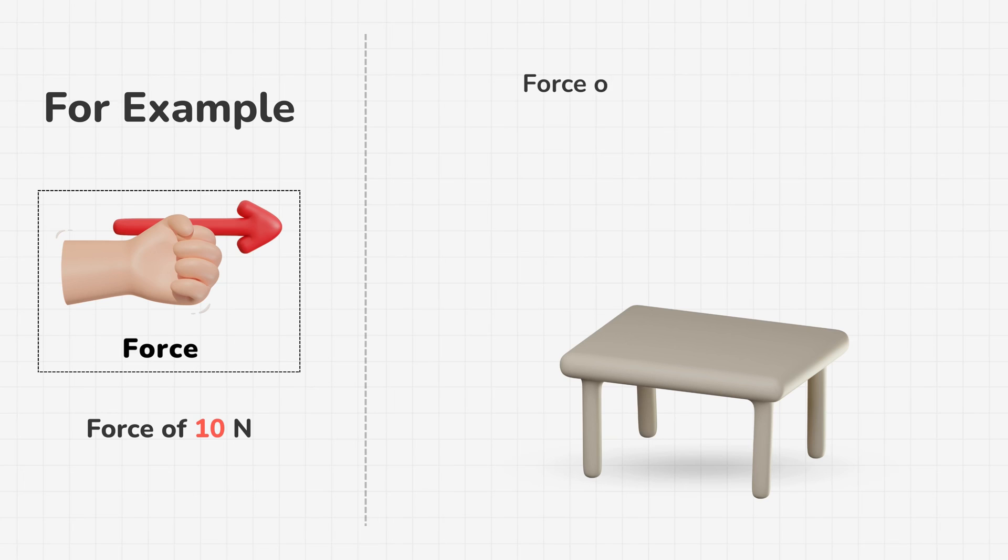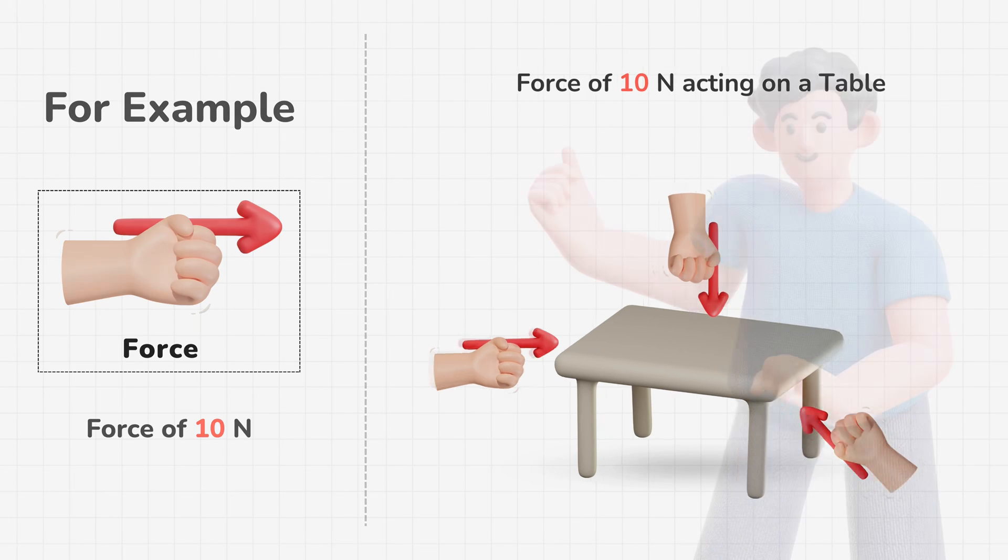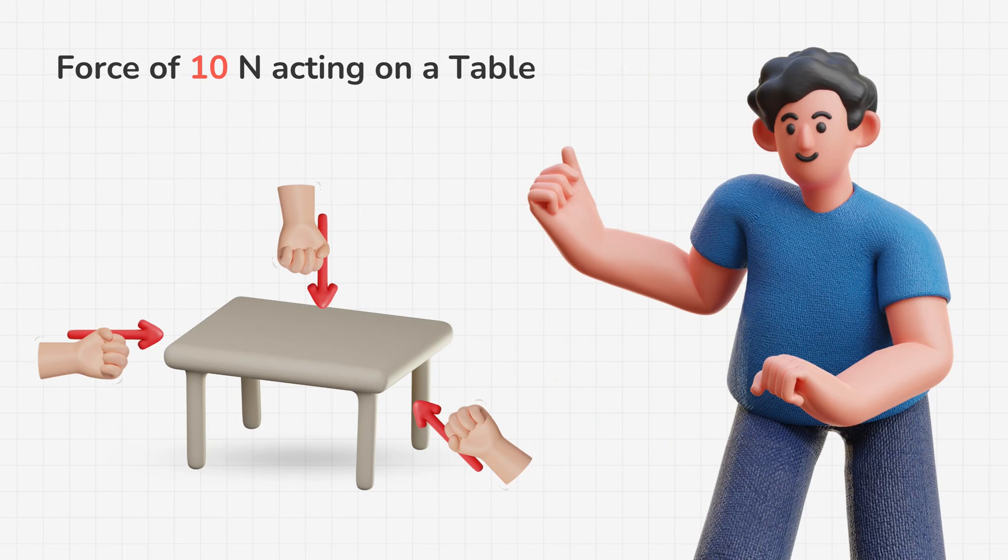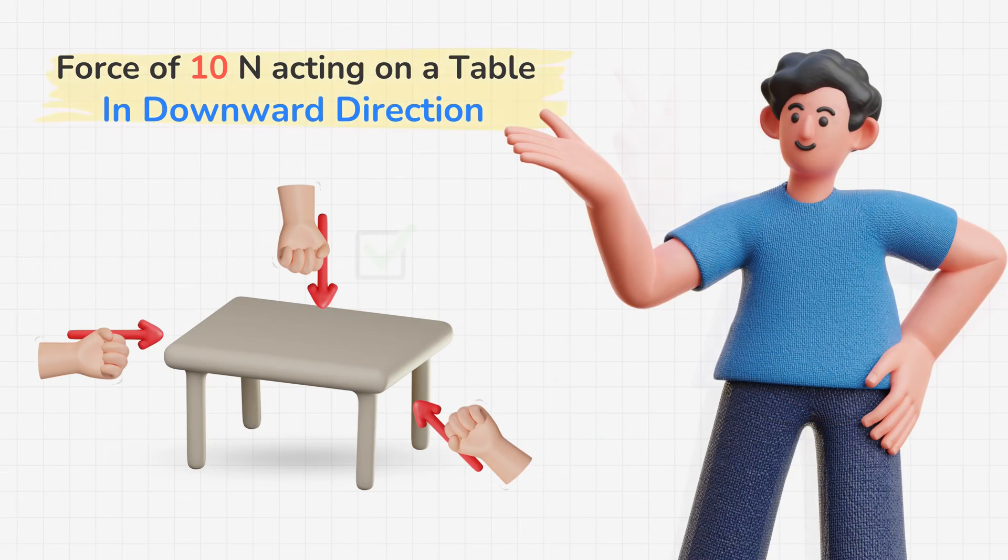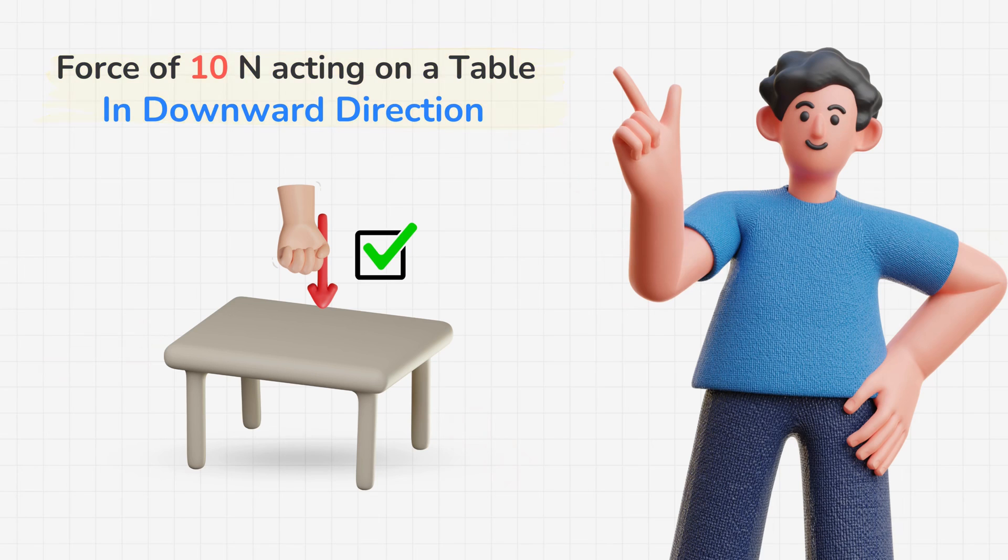If someone says a force of 10 N is acting on a table, we don't know in which direction. It could be this way, this way, or even this way. If I say a force of 10 N is acting on a table in a downward direction, the correct option becomes clear.